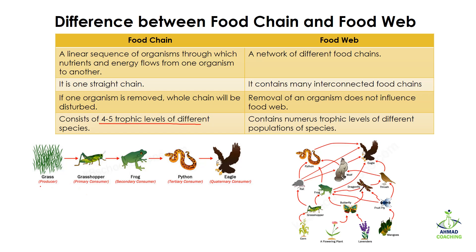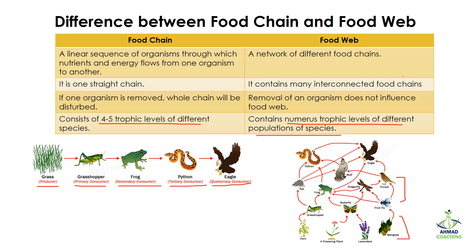In a food chain, four to five trophic levels of different species are present — for example, producers, then primary consumers, secondary consumers, tertiary consumers, and quaternary consumers. In the case of a food web, it contains numerous trophic levels of different populations of species. There may be two primary consumer levels and two secondary consumer levels, so there are numerous trophic levels.